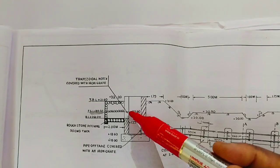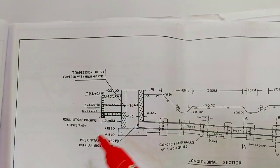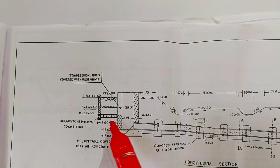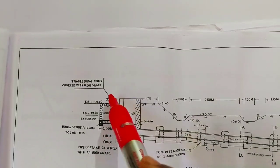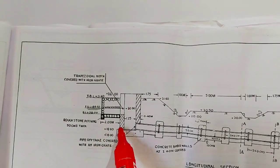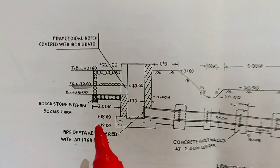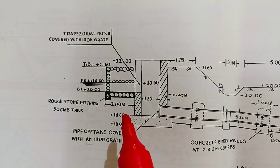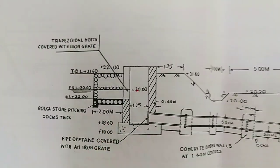On the side of the inlet, protection work - that is the apron and this is revetment. The apron length is 2 meter and it is 30 centimeter thick, 2 meter.